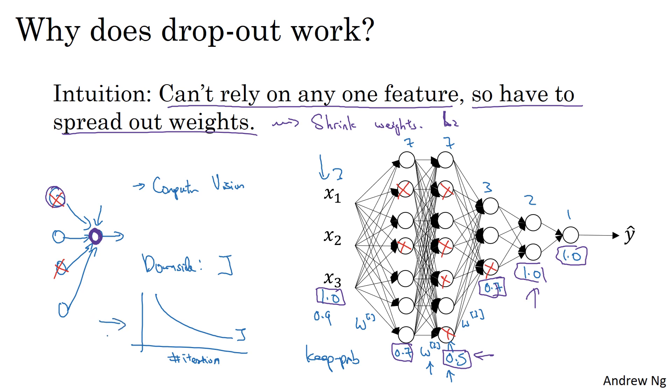So what I usually do is turn off dropout, or if you will, set keep_prop equals one, and then run my code and make sure that it is monotonically decreasing J, and then turn on dropout and hope that I didn't introduce bugs in my code during dropout.